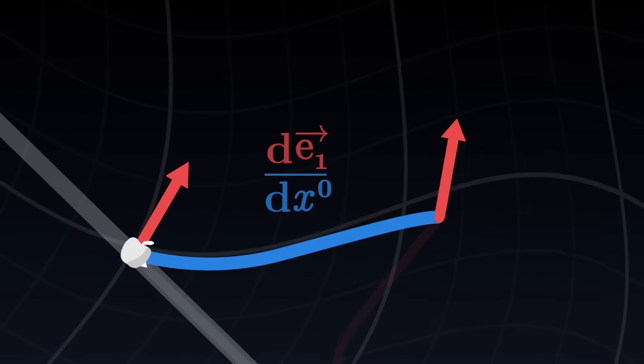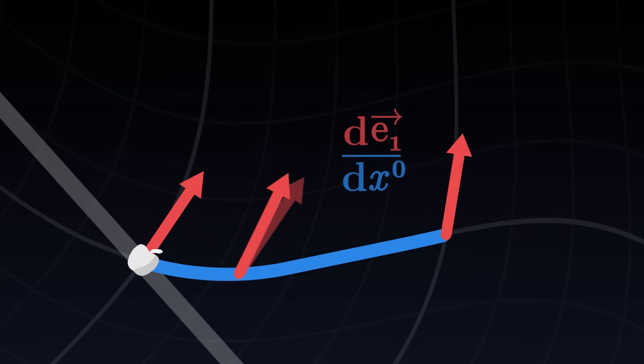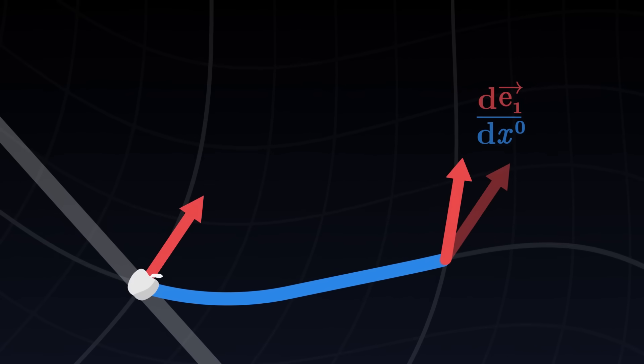For each coordinate, this gives us a new quantity which indicates how the basis vector varies along the coordinate. This variation is expressed as a vector that is the derivative of the basis vector with respect to the coordinate in question.